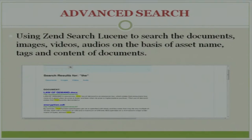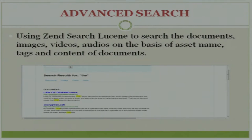The searching functionality is based on the tags which the organization adds in the admin module, and also on the basis of the contents of the documents. When an organization searches for a word, documents containing that word are listed. Clicking on a document brings up an online viewer where you can view the file directly.